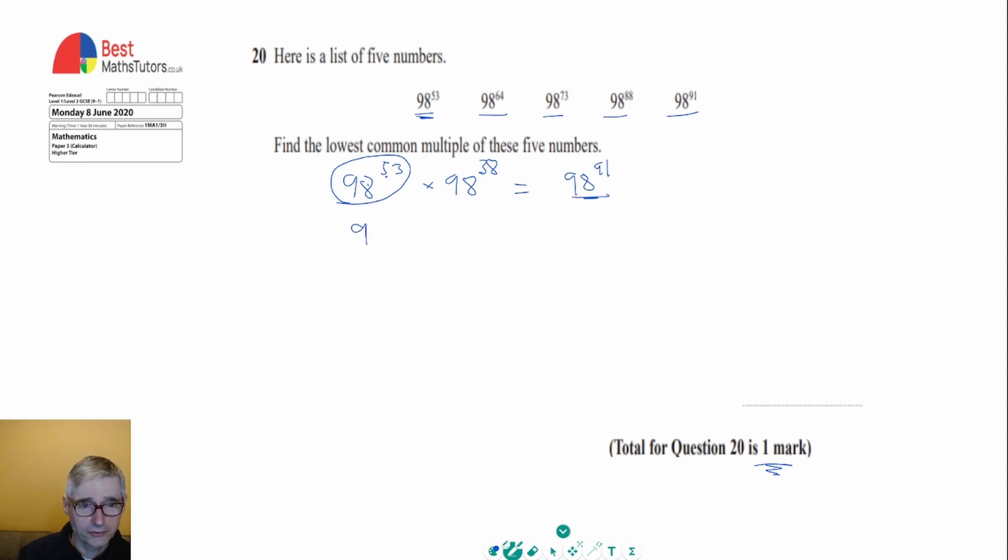I could do the same for all of these numbers. 98 to the power 64 times 98 to the power 27 would give me 98 to the 91. Similarly with 98 to the 73, if I times that by 98 to the 18, that would also give me 98 to the 91.